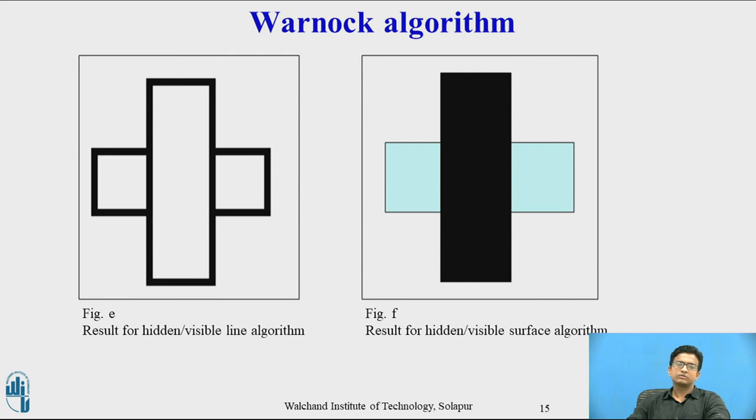Finally, we will get this result. As shown in figure E, results for hidden or visible line algorithm, in which we are identifying hidden lines. Figure F shows results for hidden or visible surface algorithm. This is how hidden or visible surfaces are identified. You can see this black surface is on top and the blue surface is below. This can be easily identified. This is how we are implementing the Warnock algorithm subdivision process.